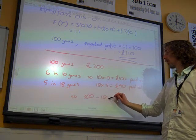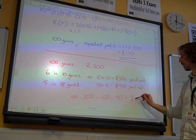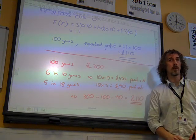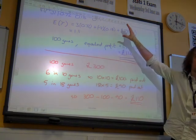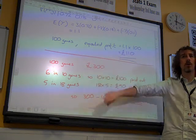300, take away 100 for the 6s, take away 90 for the 5s, gives us £110 expected. That was the formal probability way of doing it. That was thinking through what's going on in the problem.